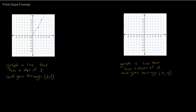Here we graph a line that has a slope of two and goes through (3, 4). Let's find (3, 4): right three, up four. From there we go up two over one — this is our line. Remember that we can also go down two and left one, and if I drew a straight line it would still be on that same line.